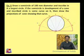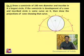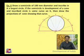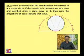So for that, divide this given development into equal number of parts. I have divided it into eight equal parts: A, B, C, D, E, F, G, H, and back to A.